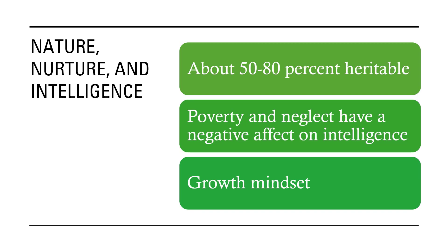About 50 to 80% of our intelligence is heritable, meaning that about 50 to 80% of the differences in intelligence from person to person are due to genetics. Our environment also plays a role. Wealthier individuals tend to have higher IQ scores, in part because poverty takes up valuable cognitive resources. When we're spending most of our time wondering how we'll make ends meet or afford groceries for the week, it's much harder to use our cognition to store new knowledge.